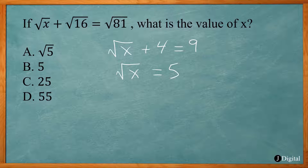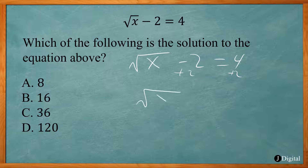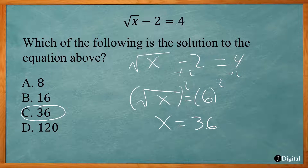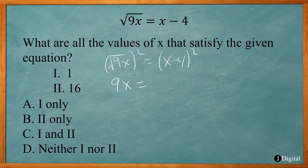In this SAT problem, it says which expression is equivalent to the third root of 27x to the fourth. Now my answer choices want the x to some power. I know 27 is equal to 3 to the third power, so I take the third root of 3 to the third power — that's just going to be 3.